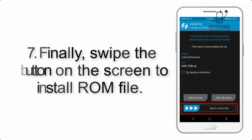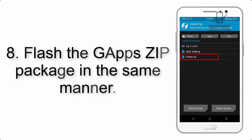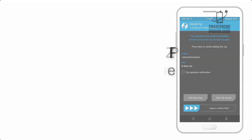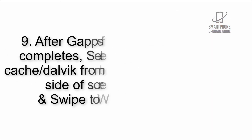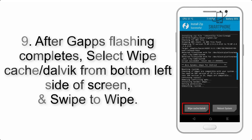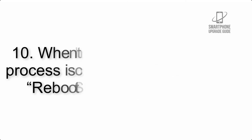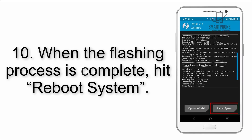Step 7: Swipe the button on the screen to install the ROM file. Step 8: Flash the gapps zip package in the same manner. Step 9: After gapps flashing completes, select Wipe Cache and Dalvik from the bottom left side of the screen and swipe to wipe.